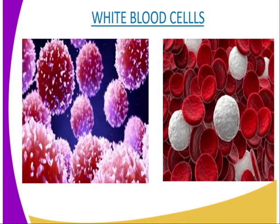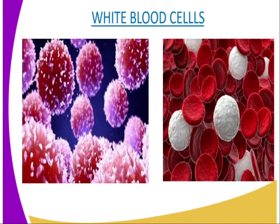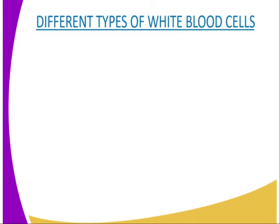The white blood cells are of two types. Having seen the granulocytes, we are now looking at the agranulocytes. They lack granules in their cytoplasm and are of two types: we have the monocytes and the lymphocytes.